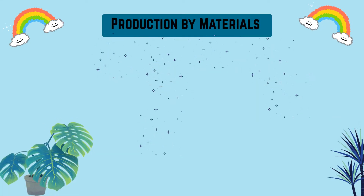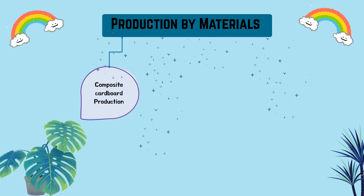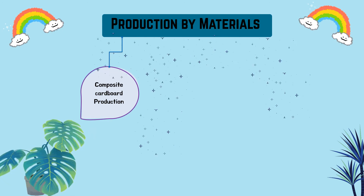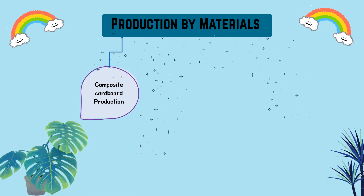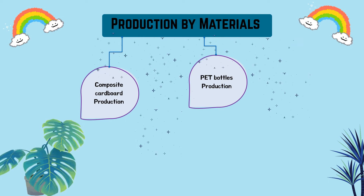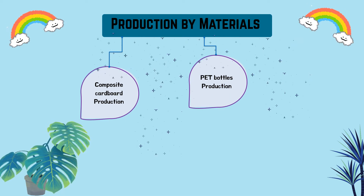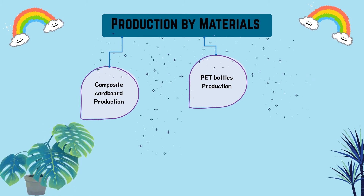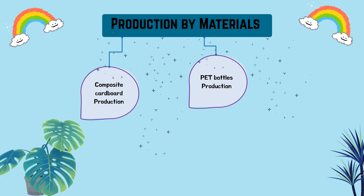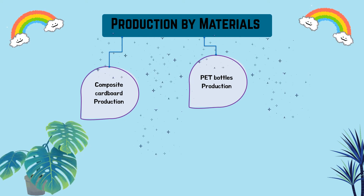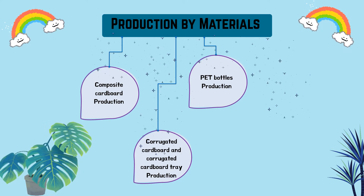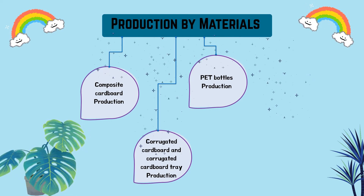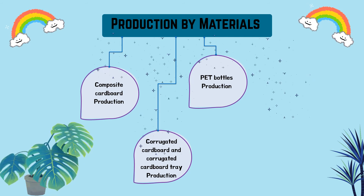Production by materials. First, composite cardboard production: the main component of the beverage carton composite is the raw carton, sealed by a layer of LDPE on the outside and inside. Second, PET bottles production: usually takes place in two stages — preforms are manufactured from dried PET granulates and then converted into bottles. Third, corrugated cardboard and tray production: LCA data from FPFCO published in 2003 for corrugated base paper and corrugated cardboard packaging were used.